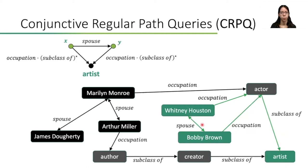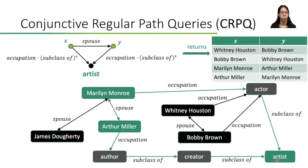Clearly, Whitney Houston and Bobby Brown satisfy this query, since the occupation actor is a subclass of artist. Furthermore, Marilyn Monroe and Arthur Miller also satisfy these conditions, since Arthur Miller's occupation author is also a transitive subclass of artist. Therefore, our query returns four outputs. Now that we know what CRPQs are and how to evaluate them, let's have a look at query containment.